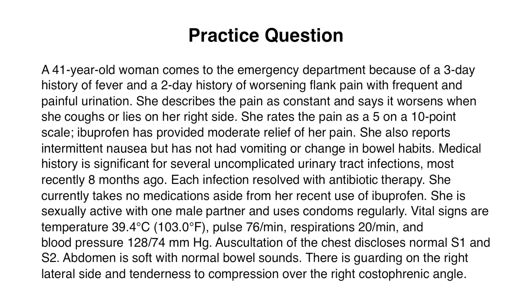Let's end with a practice question to solidify our understanding. We have a 41-year-old woman who comes to the emergency department with a three-day history of fever and a two-day history of worsening flank pain with frequent and painful urination. The pain is constant, worsens when she coughs or lies on her right side, and is rated 5 out of 10. Ibuprofen has provided moderate relief. She reports nausea but no vomiting. Her history is significant for several uncomplicated UTIs. She is sexually active with one male partner and uses condoms regularly. Vital signs show a temperature of 103°F, pulse 76, respirations 20, blood pressure 128/74. There is right-sided CVA tenderness on physical exam.